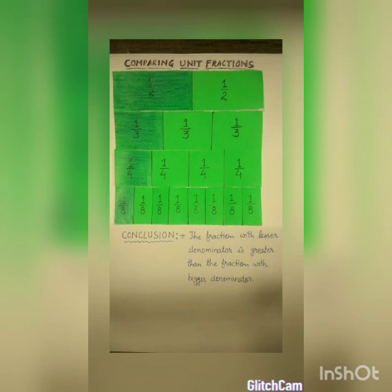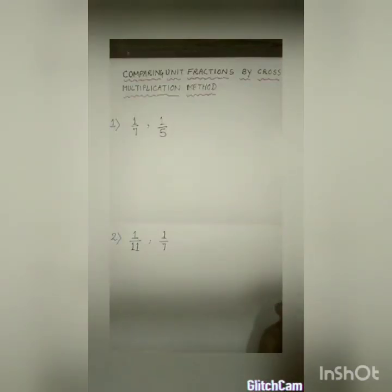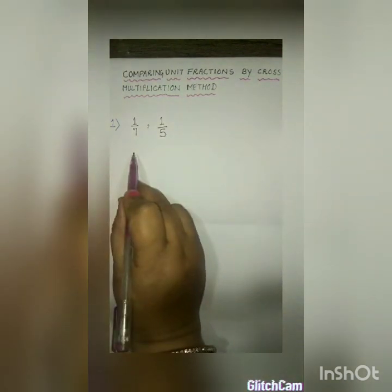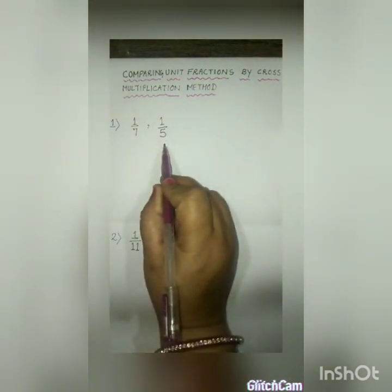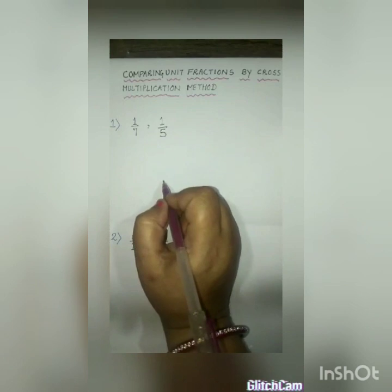Children, this is the direct method by which you can find out which unit fraction is greater and which is smaller. Now we will discuss another method of comparing unit fractions, which is the cross multiplication method. So, let's start.